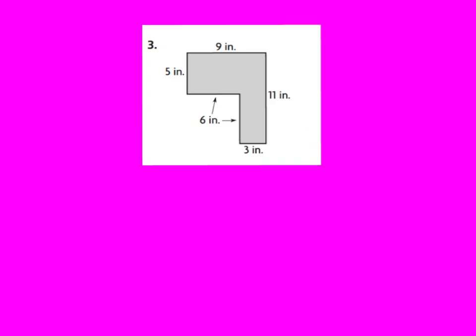So for question 3 you have two different ways that you can make combined rectangles. You can choose to make a rectangle this way and do 5 times 9, find the area for A, and then 3 times 6 would be 18 for rectangle B — so you can add those two combined rectangles. Or you can say you'd rather make a rectangle going this way and find the area for A and B. I want you to pause the video, find your answer, and then we'll check it together. You choose the way that you prefer.